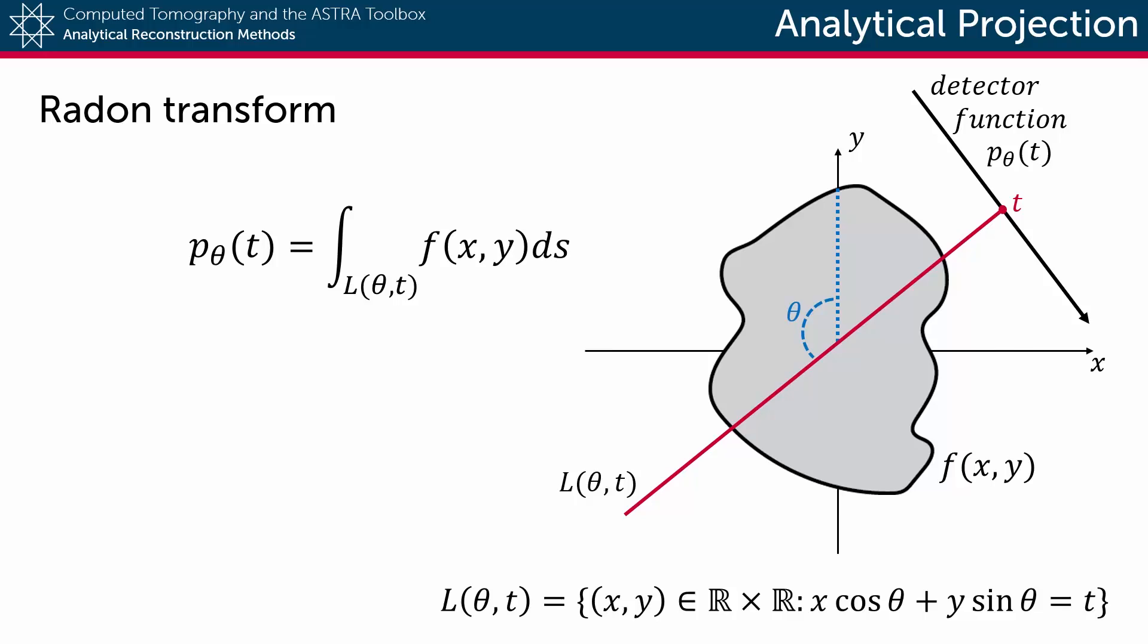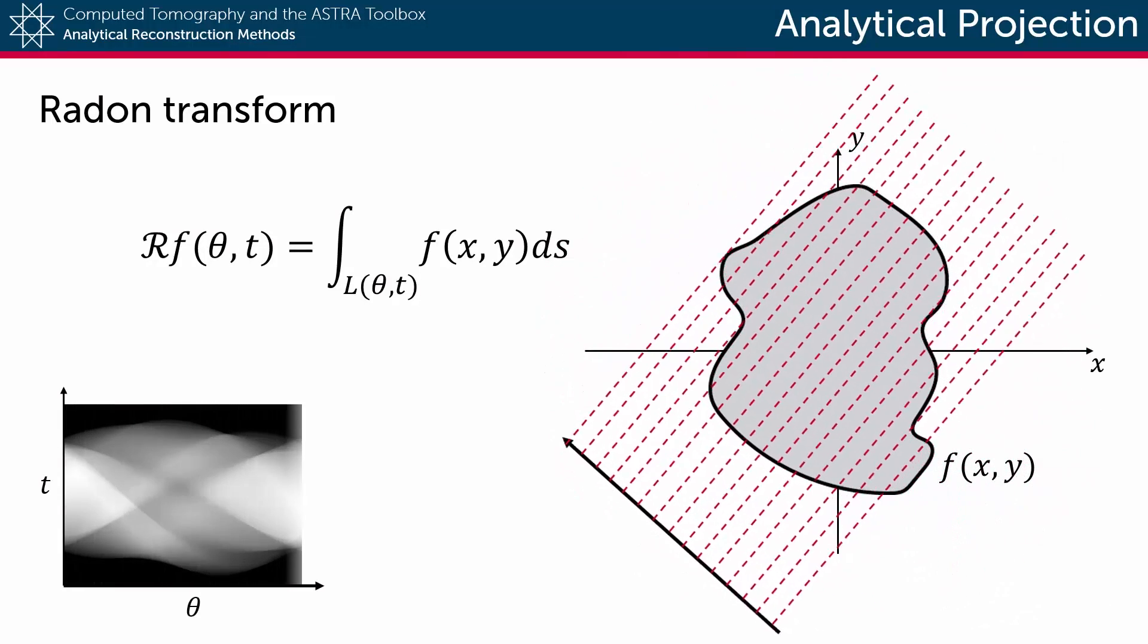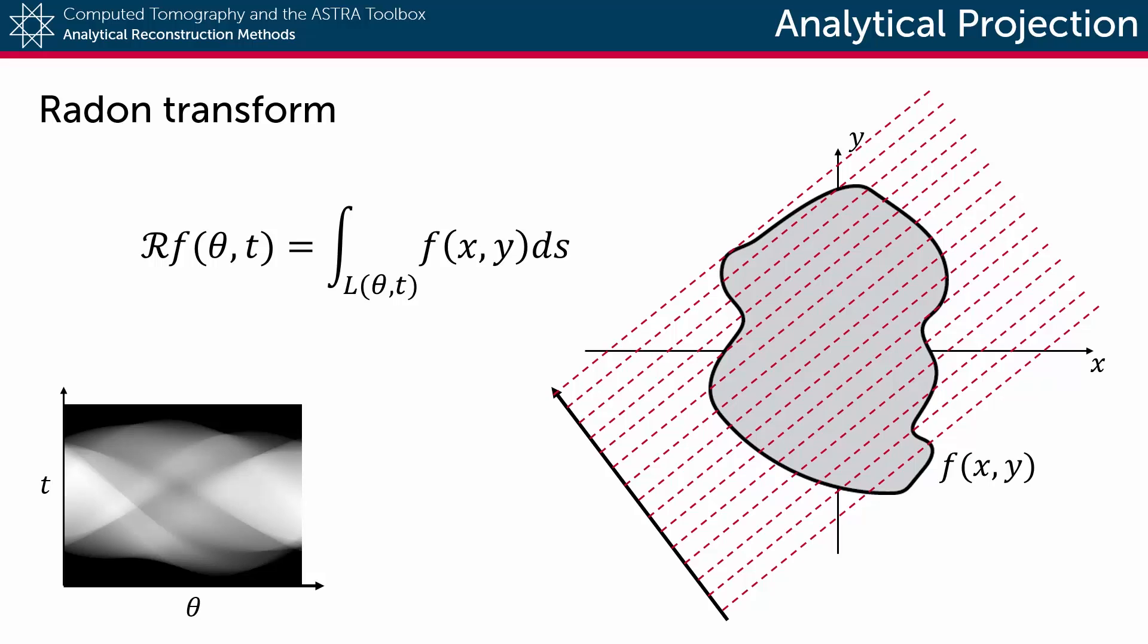If we do this for all projection angles and all positions on the detector line—basically rotating the detector line around the object function, constantly building a detector function each time—then we end up with a transformation function called the Radon transform.